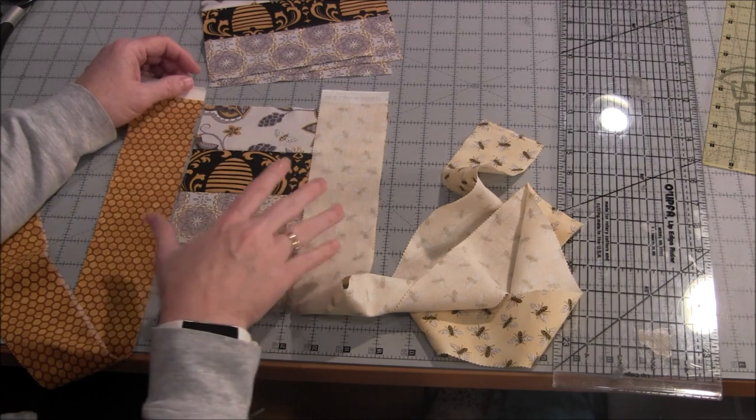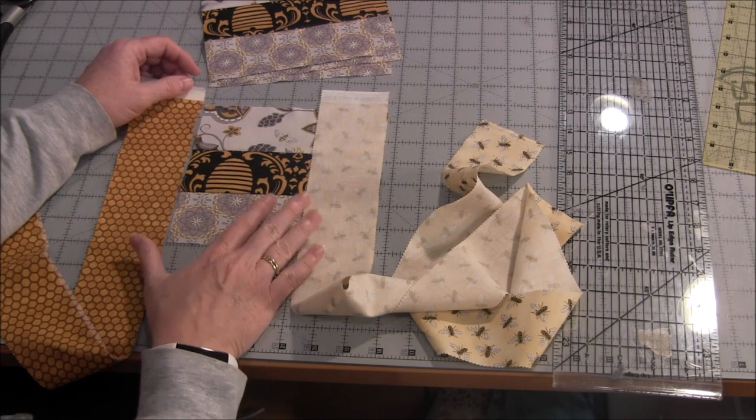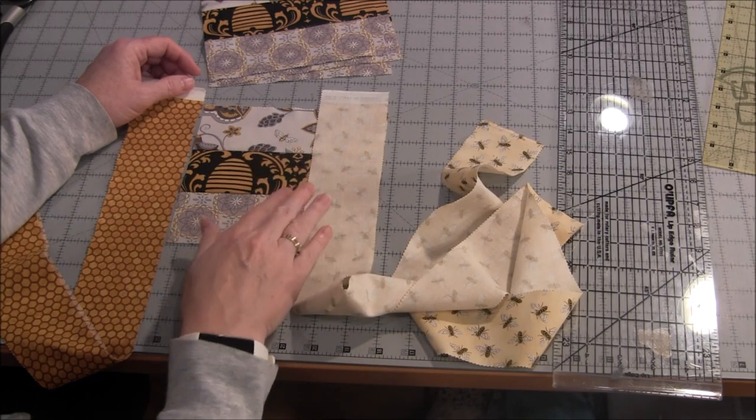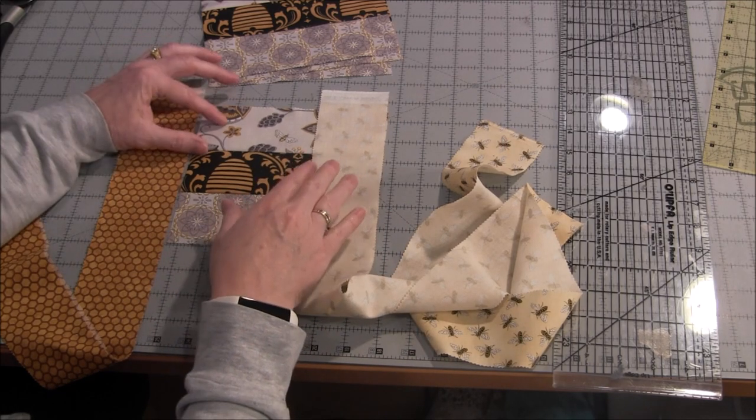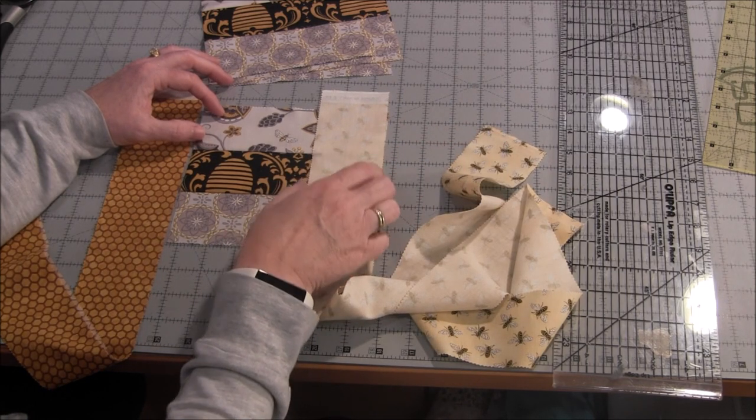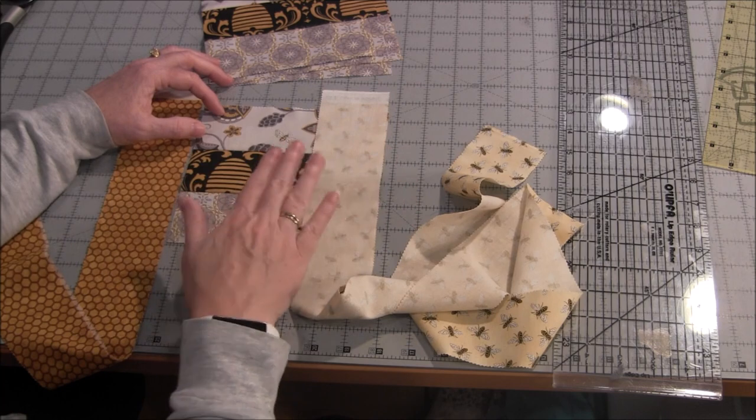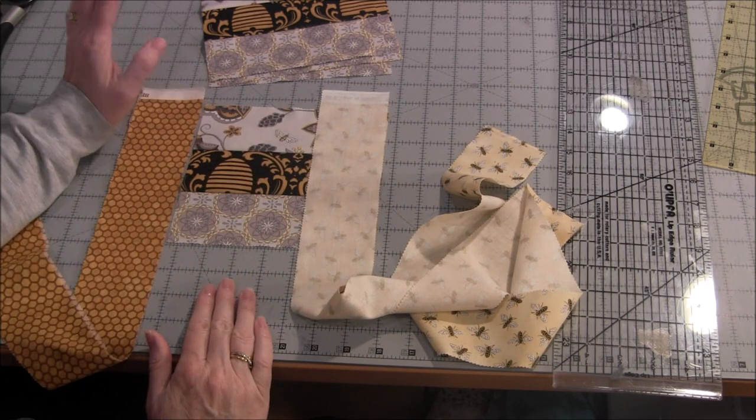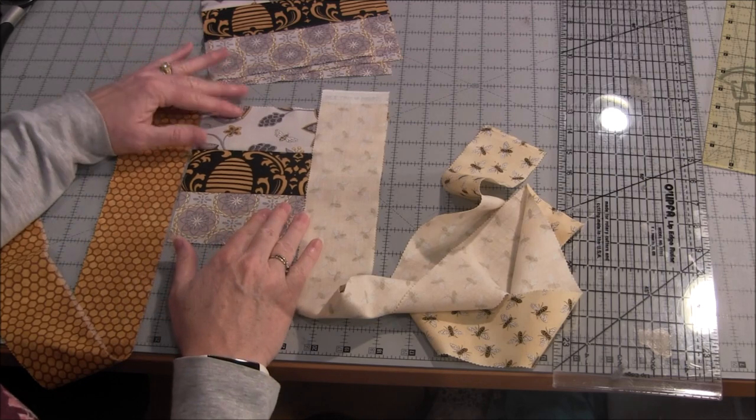After the two strips are all sewn on, then I will go to the ironing board and iron the seams towards the side strips and iron the whole thing flat. So I'll come back after I've done all that.